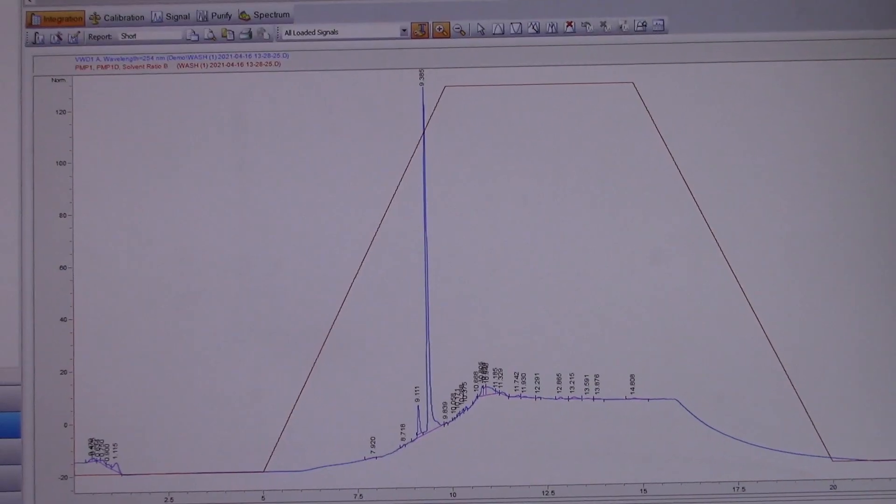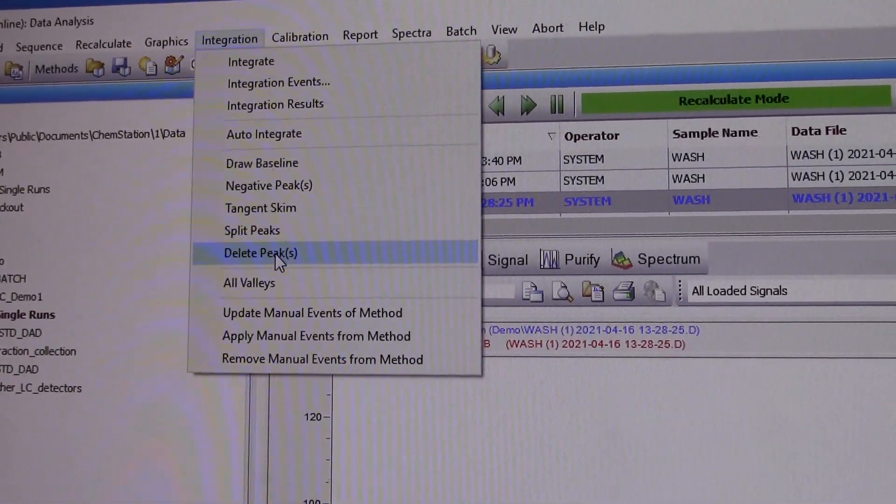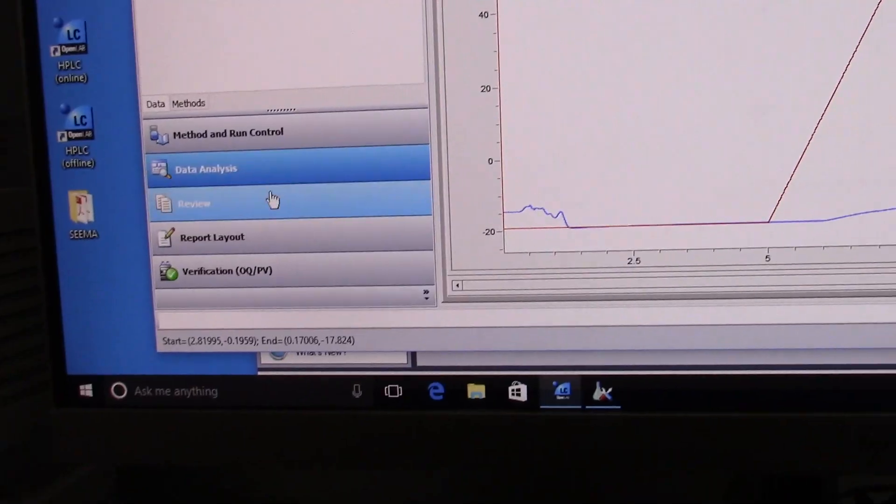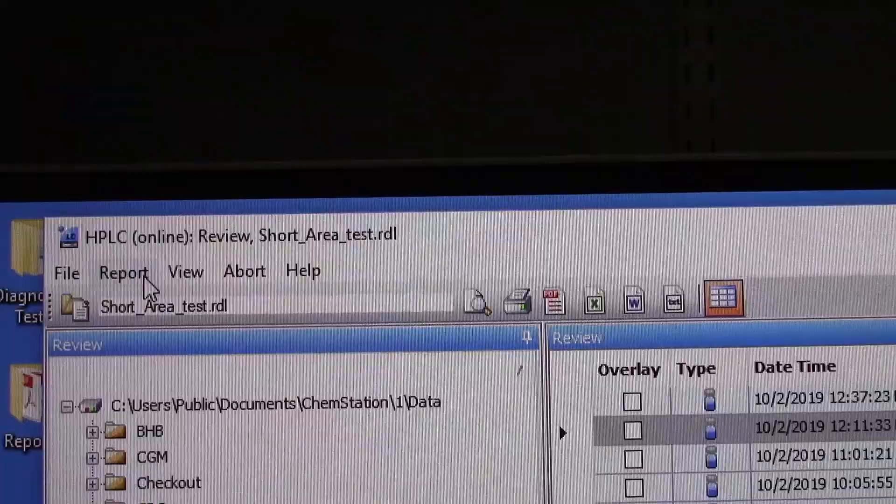Once the HPLC is done, you can print as is or make some adjustments by clicking integration and delete peaks and removing unnecessary peaks that you don't care about. Save your modified graph and you can print it or save it as a PDF.